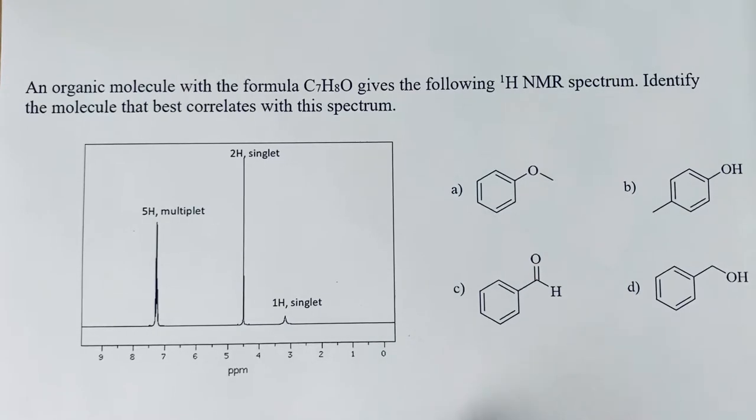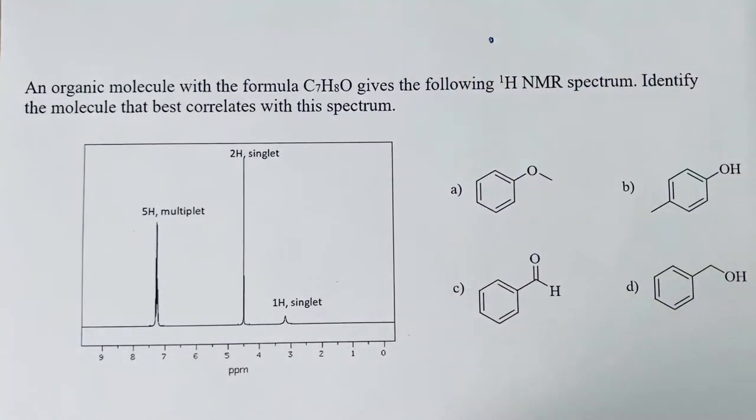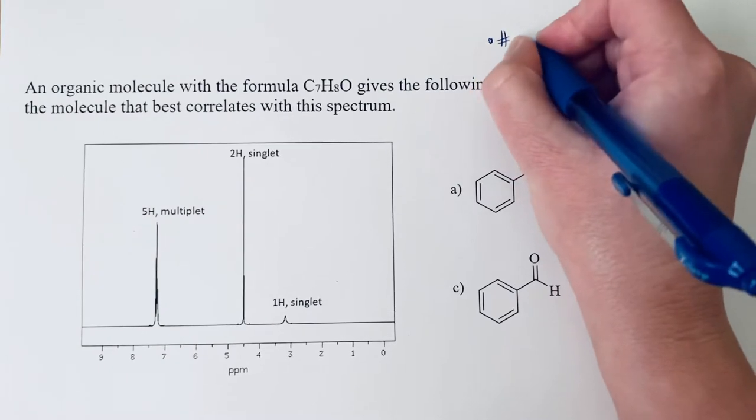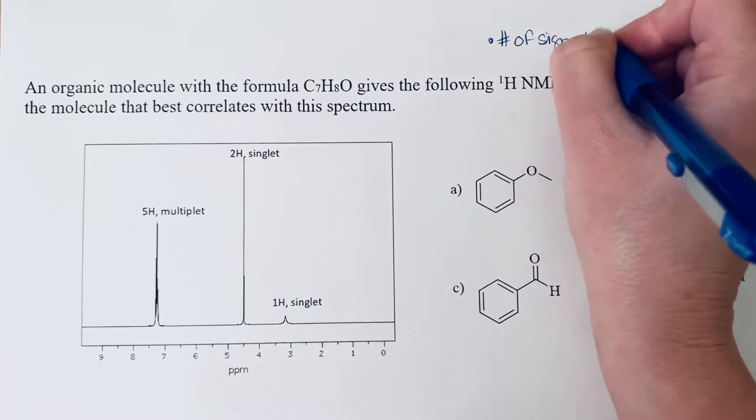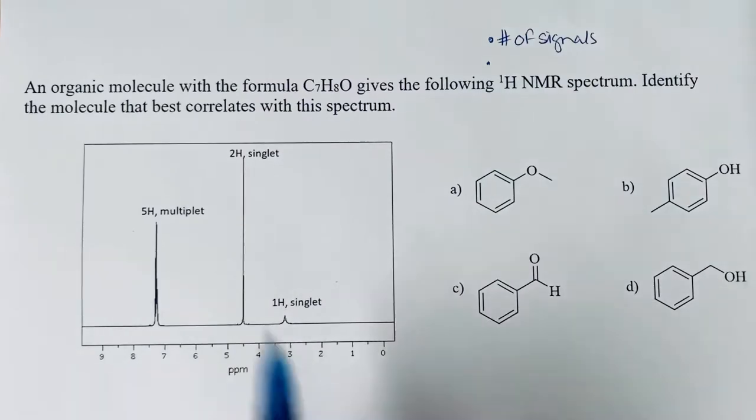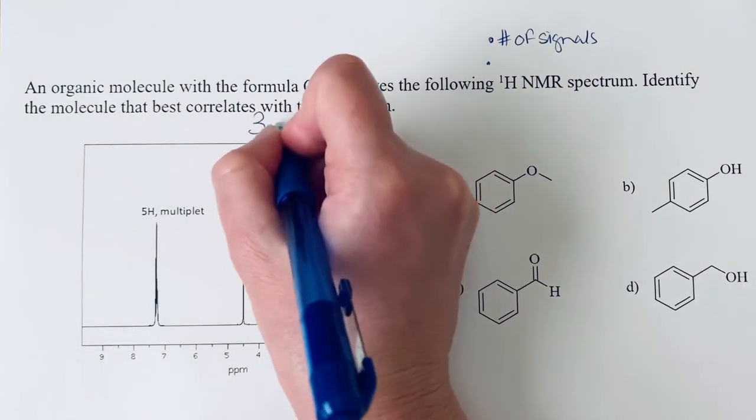The key pieces of information that we always look at in a proton NMR are first the number of signals. Because that's an easy thing to count. We see that we have three signals.